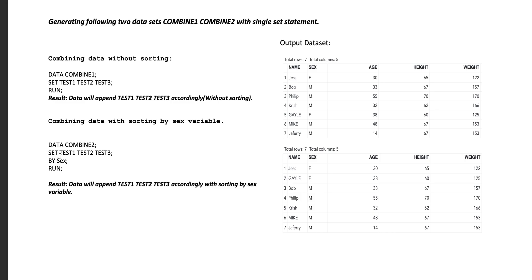Similarly, when we use combine two — a single SET statement with a BY statement using the sex variable — when we run this program, we obtain the result shown in the second table on the right side of the window, where the sex variable is sorted. We still obtain seven rows, but the sex variable is sorted.